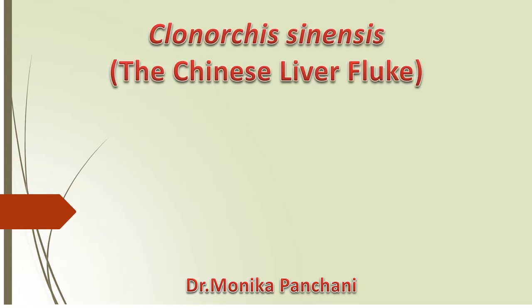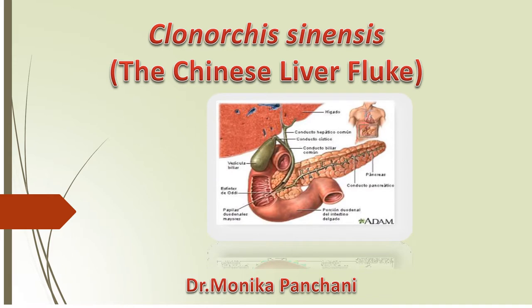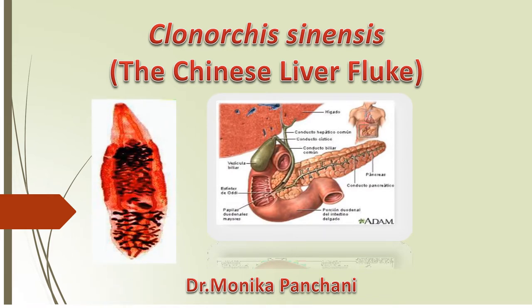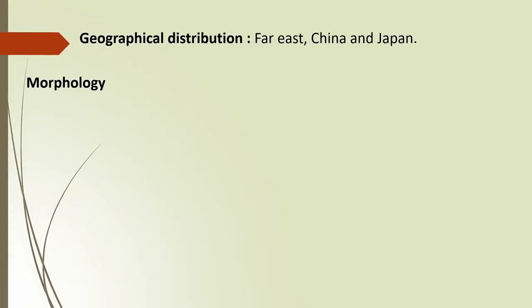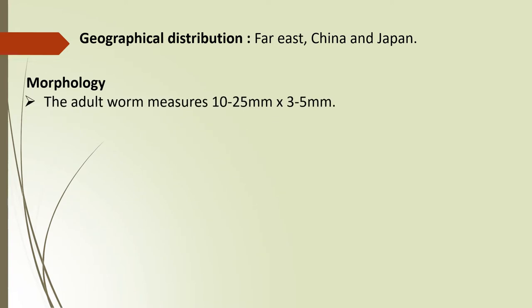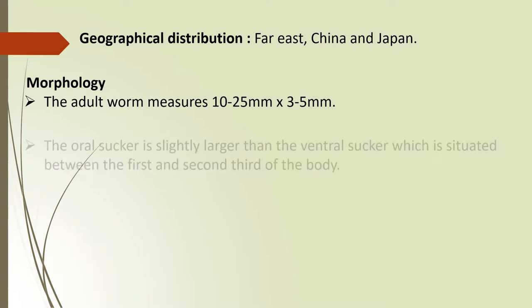The next method is Clonorchis sinensis, also named as the Chinese liver fluke. Its geographical distribution includes the Far East, China and Japan. The adult form measures about 10 to 25 mm in length and 3 to 5 mm in width.